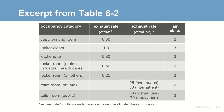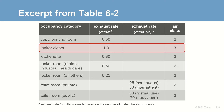When using the prescriptive path, here's an excerpt from the table listing minimum exhaust rates for those specific occupancy categories where contaminants are likely to be generated. For example, a janitor's closet must be designed to exhaust 1 CFM per square foot of floor area when in use.